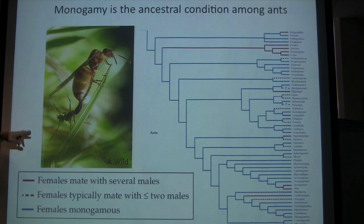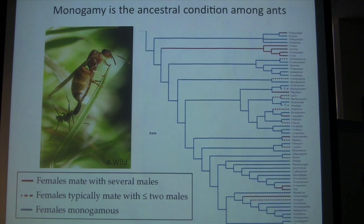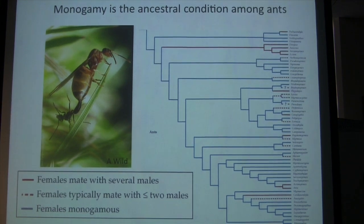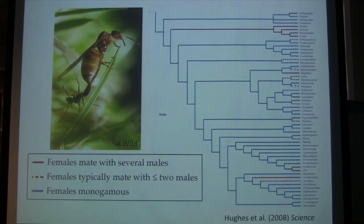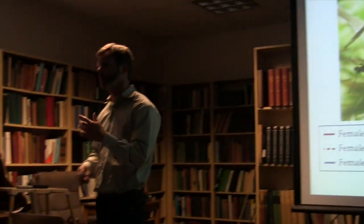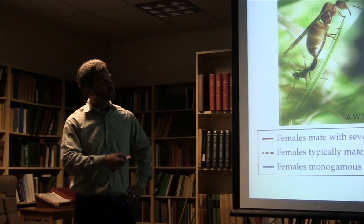Monogamy is the ancestral mating condition in all hymenoptera. In ants specifically, monogamy — females mating with just one male — is the ancestral condition, with derived conditions of polyandry where females mate with more than one male. This has been important given decades of debate about the importance of mating systems in hymenoptera for maintaining eusociality and sterile castes, with arguments based on kin selection theory as well as ecological constraints and higher levels of selection.